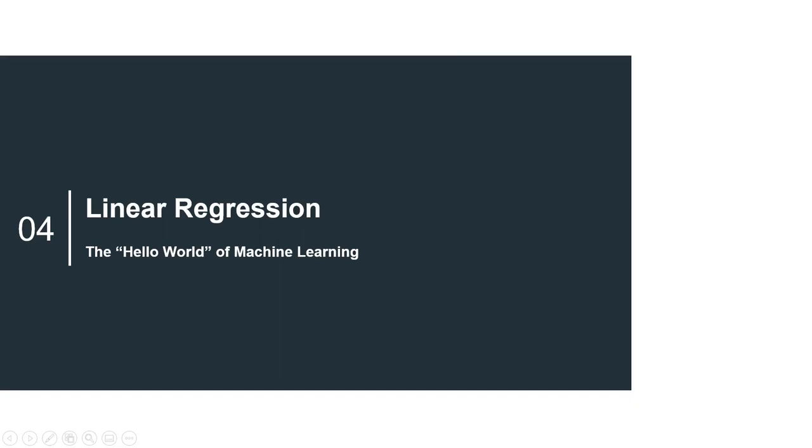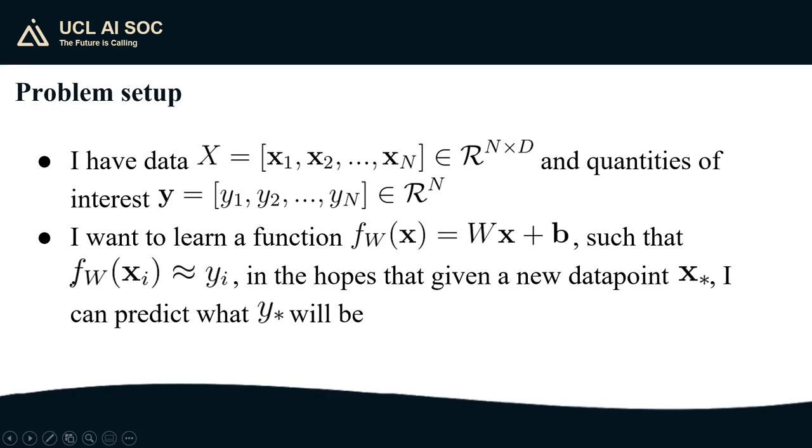Finally we'll look at the simplest form of machine learning called linear regression. Let's say that I have n different observations of d different quantities. I can represent each observation as a vector of dimension d and I can stack all these vectors into a matrix of dimension n by d. Let's also say that for each vector x I also have an observation of a quantity of interest y. I'm going to stack my quantities of interest into a vector y as well. My goal in linear regression is going to be to learn a function that is the particular shape w x plus b where w is a matrix and x and b are vectors such that when I apply it to each of my vectors in the training data I get something that's close to the corresponding quantity of interest in the hopes that when I encounter a new data point I can predict what the new quantity of interest will be without actually knowing it.